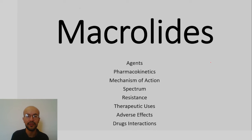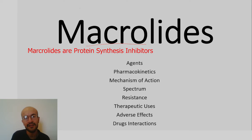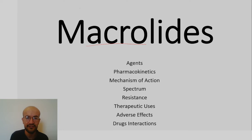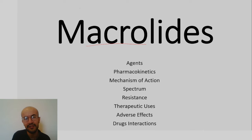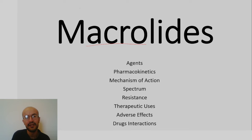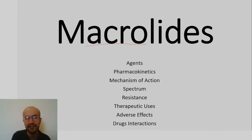Hello everyone and welcome to a new video. Continuing our discussion about antibiotics, we are going to talk about the macrolides. The name macrolides originates from their structure — these agents contain a macrocyclic lactone ring with sugar molecules. They are used as an alternative to penicillin in case of penicillin allergy, because they have a similar spectrum to penicillin.